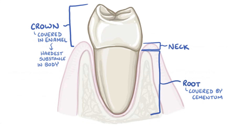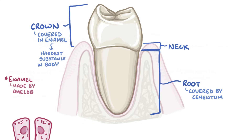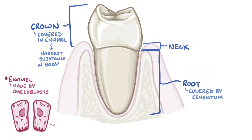When the teeth are developing, enamel is made before the tooth erupts into the mouth by a group of cells called the ameloblasts, that die once the tooth erupts, meaning that the teeth lose the ability to make more enamel forever.